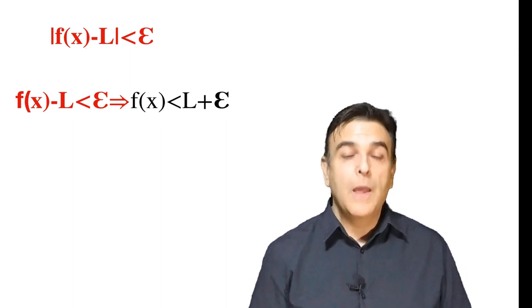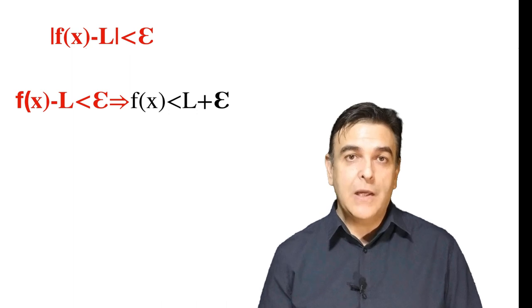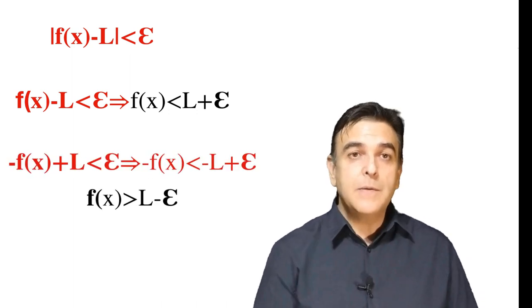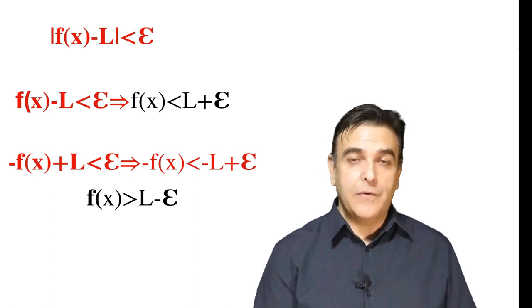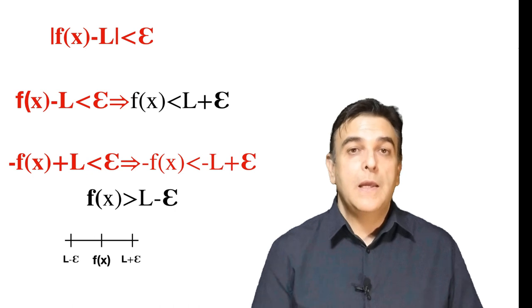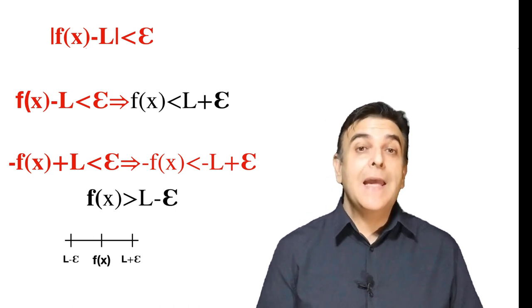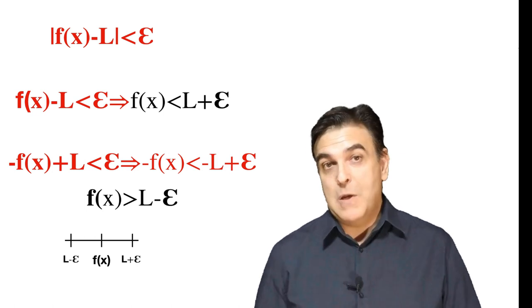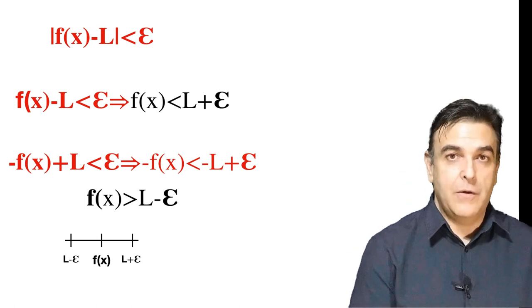¿Qué implica esto? Que el valor absoluto de f(x) menos el límite L es menor que epsilon. En la parte positiva: f(x) menos L menor que epsilon, despejando f(x) nos queda f(x) menor que L más epsilon. Y en la parte negativa: f(x) mayor que L menos epsilon. Hemos creado alrededor de L otro intervalo donde epsilon es el radio.